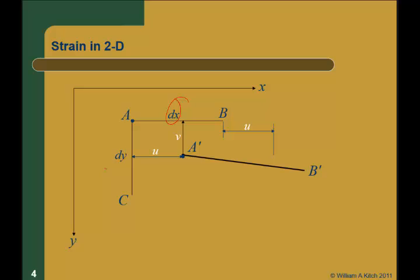Similarly, B is going to move too, but it's going to translate differently. In the x direction, it's going to translate U plus some other amount. That amount is the partial of U with respect to x — the rate of change of the displacement — times dx. If A moved U in the x direction, B is dx farther in the x direction, so B must move at least U plus a change, which is the partial of U with respect to x times dx.